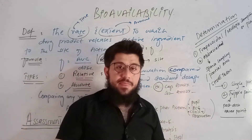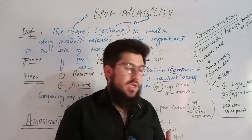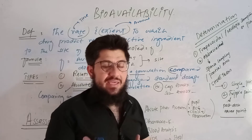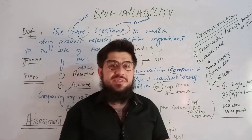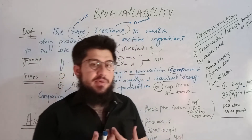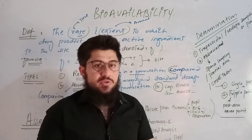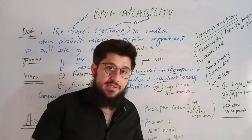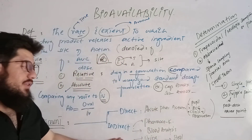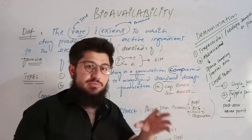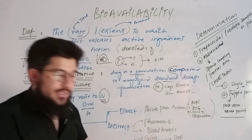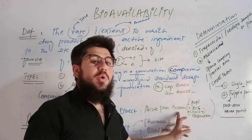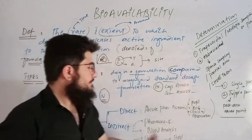In the indirect assessment, we go through pharmacokinetics — absorption, distribution, metabolism, excretion — and we take and analyze blood, urine, and stool samples. Such analysis is called indirect assessment. By contrast, when you observe the patient directly before and after drug administration, that is called direct assessment.